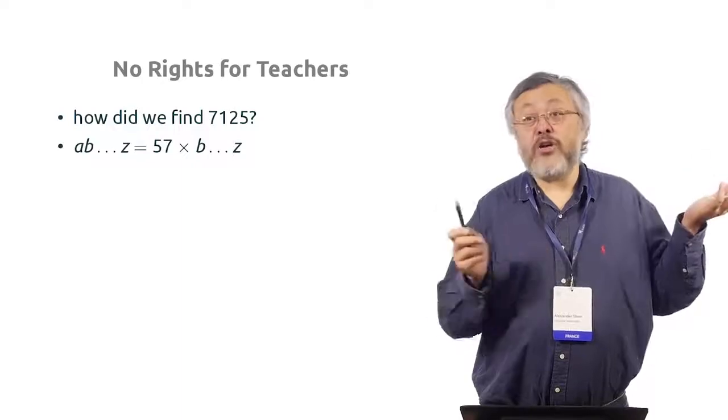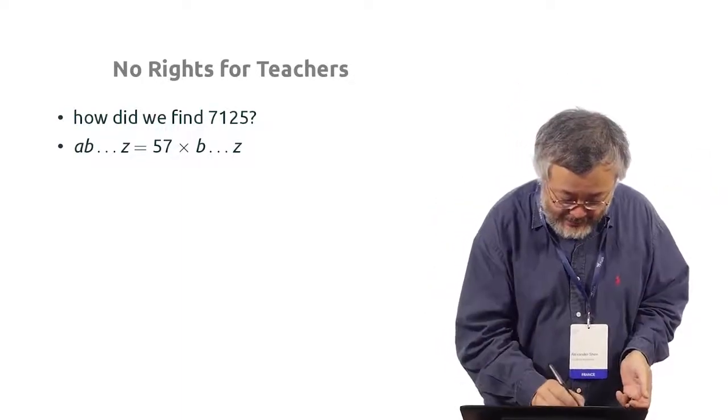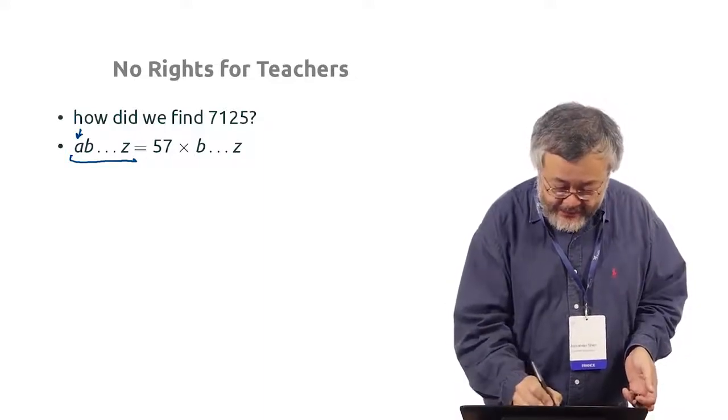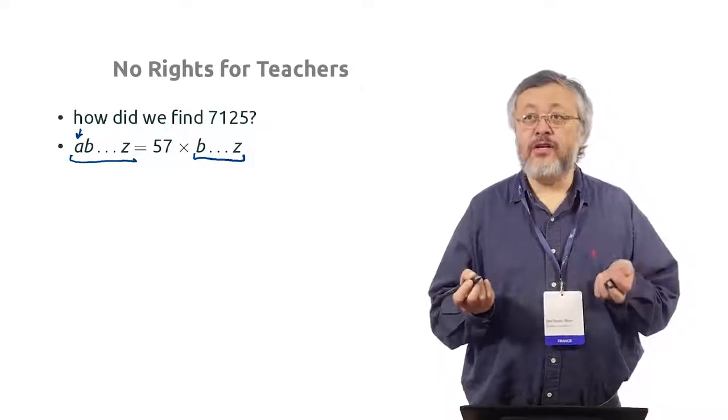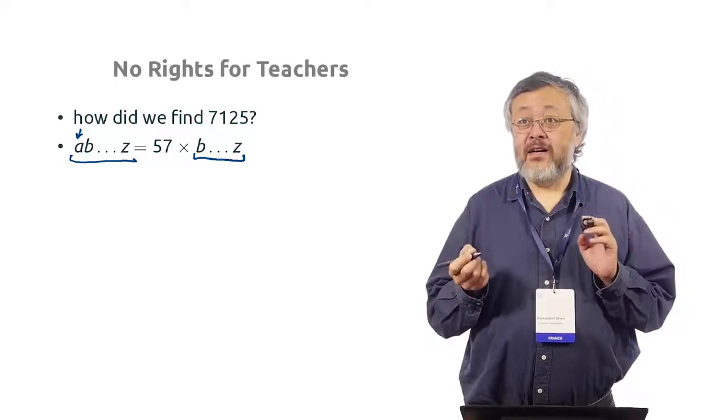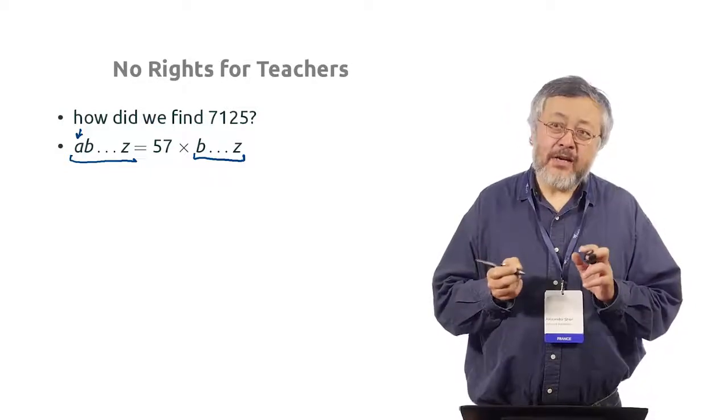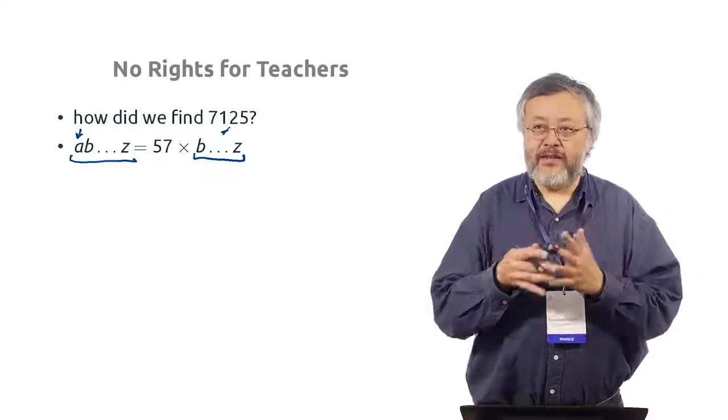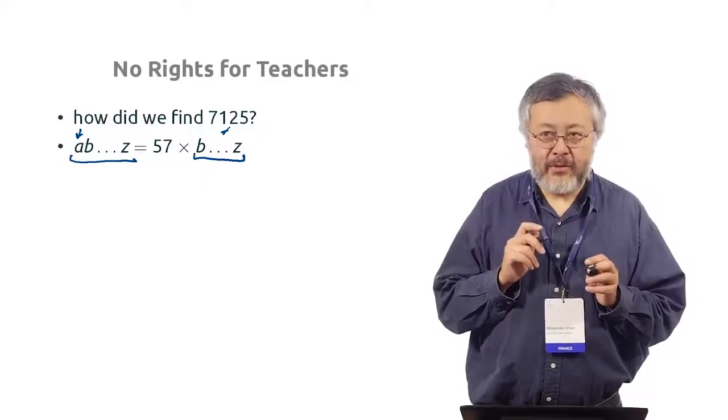Let's write again what do we want. Here is the number. Here is the first digit which should be deleted. This is what remains. And this is our equation shows what should be achieved. But this is not very common for algebra because there are some dots here. The number is written in a decimal notation. It's not very good. So let's rewrite something.